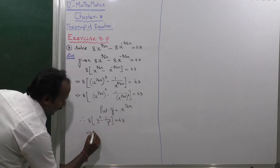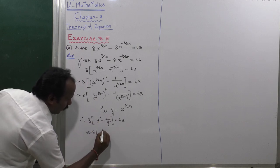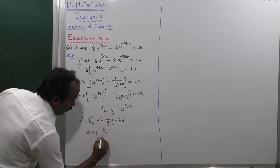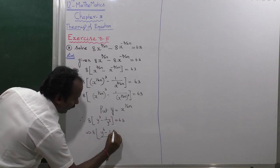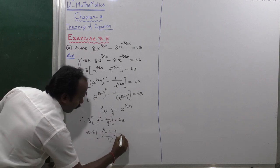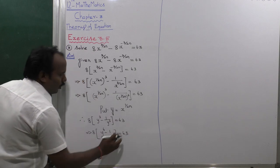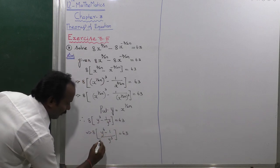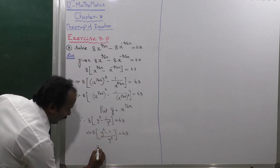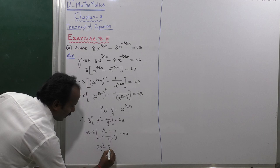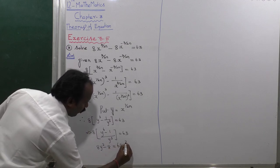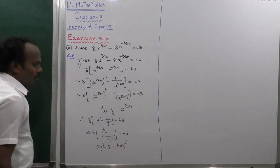Which implies that 8 into y power 6 minus 1, whole divided by y power 3, is equal to 63. Cross-multiplying, 8y power 6 minus 8 is equal to 63 y cubed.